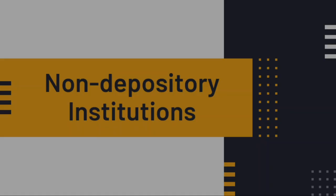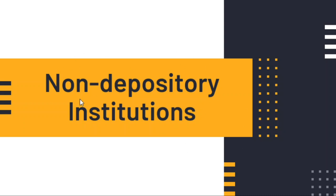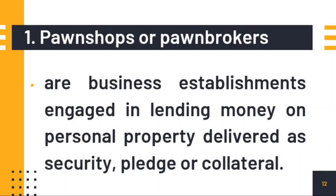Now let's proceed to the additional types of non-depository institutions. As you may remember, these include insurance companies, stock brokers, and investment companies. They don't have banking functions of collecting savings and lending money. Instead, they collect money — sometimes as premiums for insurance — and then invest that money. Additional types include pawn shops or pawn brokers, which are business establishments engaged in lending money on personal property delivered as security, pledge, or collateral.